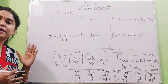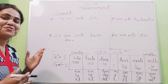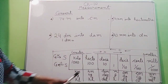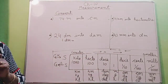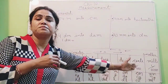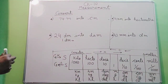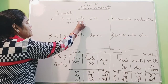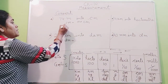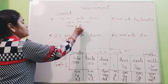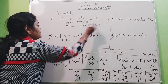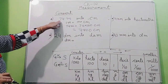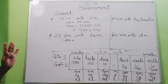Example: convert 74 meters into centimeters. From meter to centimeter, we are moving from greater to smaller — 2 jumps — so we multiply by 100. Therefore 1 meter equals 100 centimeters. So 74 meters equals 74 into 100, which is 7400 centimeters.